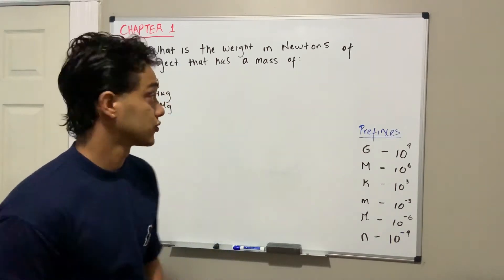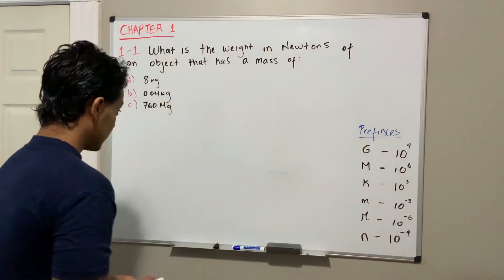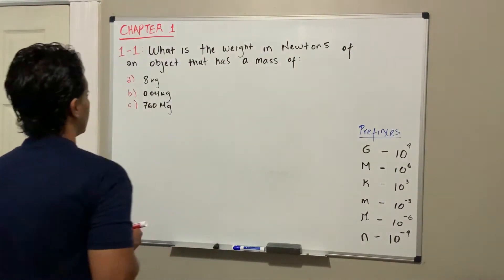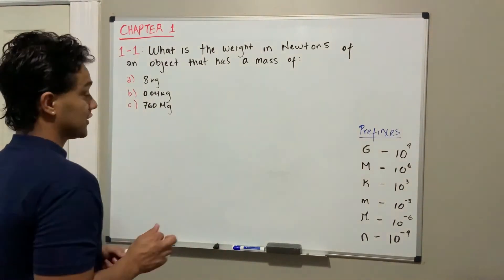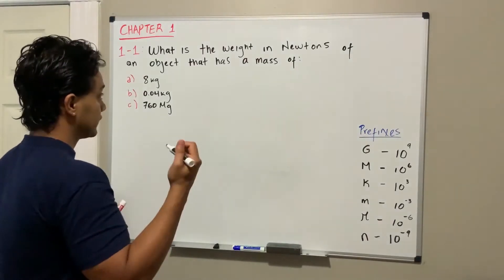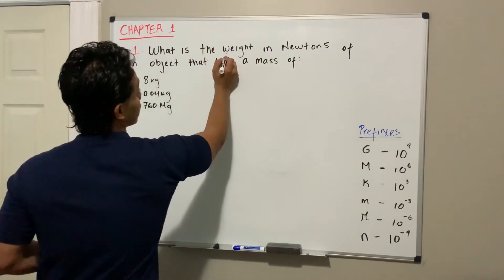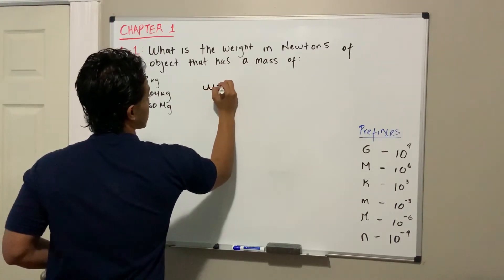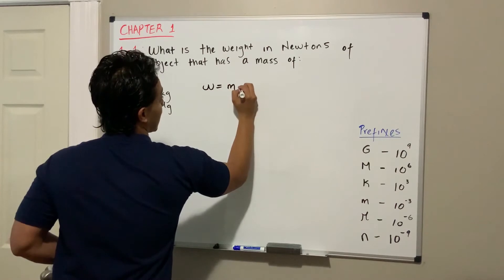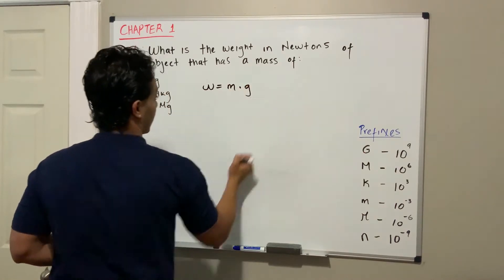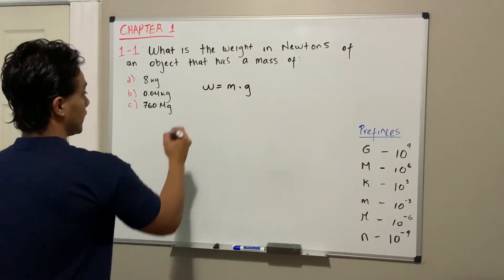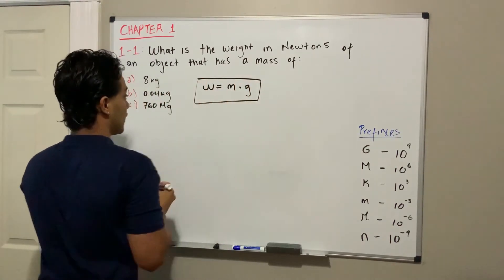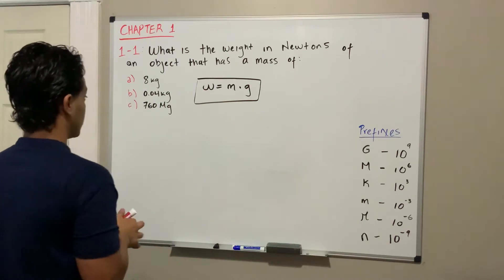Let's start with the question. There is a formula that we're gonna use when they ask us for weight. What weight means is actually mass times gravity. So this is the main equation we're gonna use for this example, and we're gonna start with problem A.